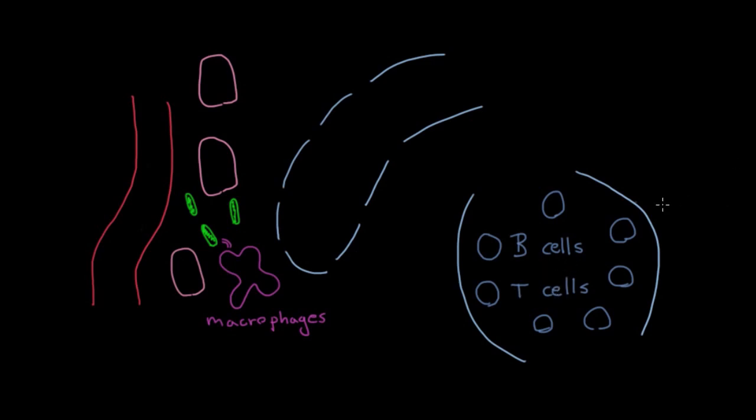And that is precisely what this lymphatic system does because these bacteria are going to get swept in. And at the same time, these macrophages might gobble up some of these bacteria. And once they've done that, they might migrate into these lymphatic vessels. And it turns out that the way your body resolves all this is to sweep all these things directly to the nearest lymph node. And that's what this structure is called. It's called a lymph node.